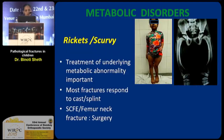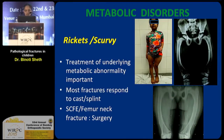We also have certain metabolic disorders like rickets and scurvy which are associated with pathological fractures. Again, treatment of the underlying metabolic abnormality is important, and once you correct that, most fractures respond to just cast or splint. But if you have slipped capital femoral epiphysis or femur neck fractures, they may need surgery.